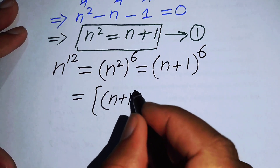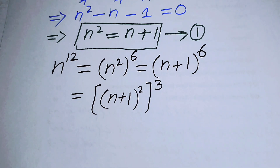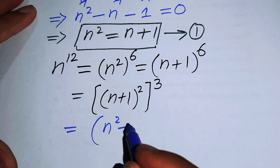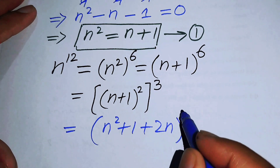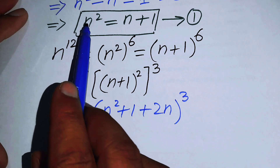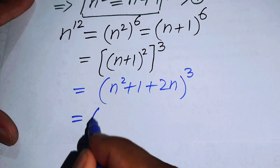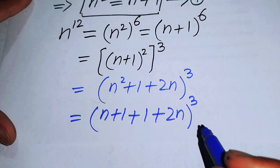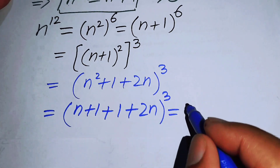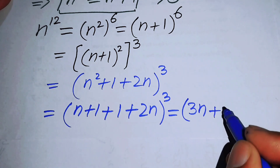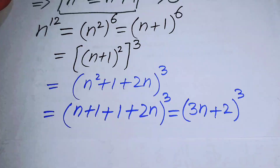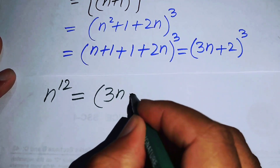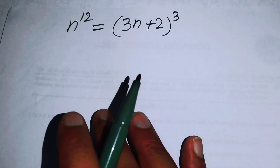Substituting n² = n+1, we get (n+1)^6. We rewrite this as [(n+1)²]^3. Expanding (n+1)² gives n² + 1 + 2n, and substituting n² = n+1 again gives n+1+1+2n = 3n+2. So n^12 equals (3n+2)^3.